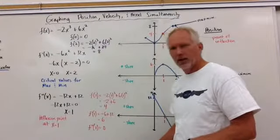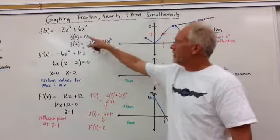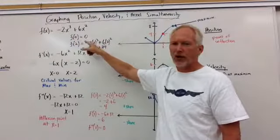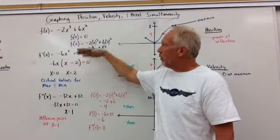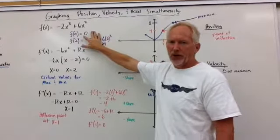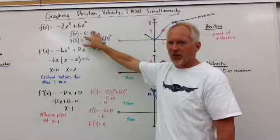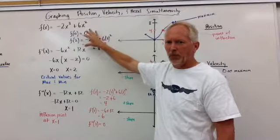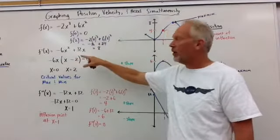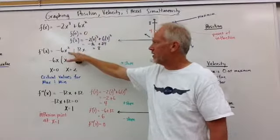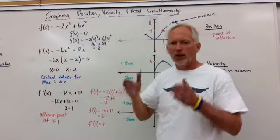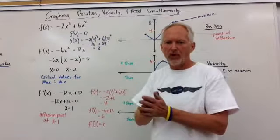We've got f(x) is equal to negative 2x cubed plus 6x squared. And what we want to do first is find the first derivative. So we do that: negative 6x squared plus 12x. Why are we doing that? Because we want to know where the max and min points are, those critical values to help us draw the graph.